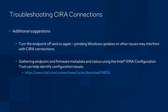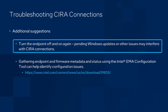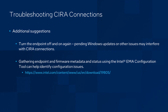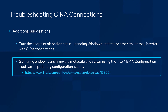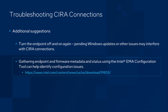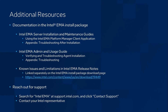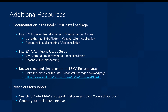Finally, a couple of additional suggestions when troubleshooting CIRA connectivity. The evergreen option: turn it off and on again. Sometimes, pending Windows updates or other transient issues can interfere with CIRA connections and a reboot can help. I'll also highlight the link here to the Intel Emma configuration tool, which is a command line tool that can gather relevant metadata about the endpoint and its Intel AMT or ISM firmware, and this can help identify configuration issues. For further resources that can help with troubleshooting, check out some of these key sections and documentation included in the Intel Emma install package. And for more support help, you can always search for Intel Emma at support.intel.com or contact your Intel representative. With that, thank you for watching.